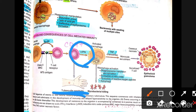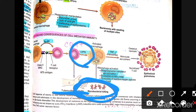TH1 helper T cells and CD4-positive T cells release interferon gamma. Interferon gamma then activates macrophages, turning them into activated macrophages — ones that were previously unable to kill the bacteria.